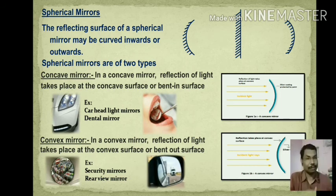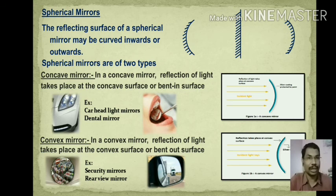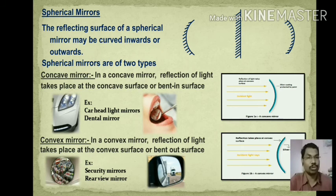In a concave mirror, the reflection of light takes place at the concave surface or bent-in surface. Examples of concave mirrors are car headlight mirrors and dental mirrors.